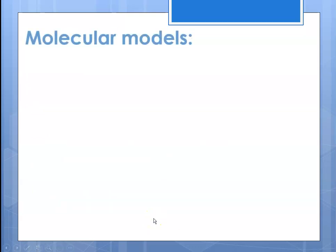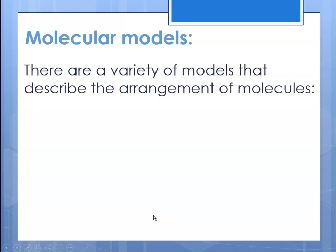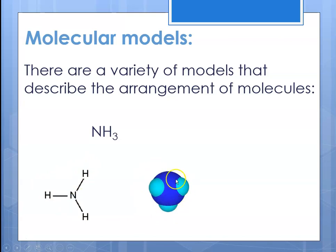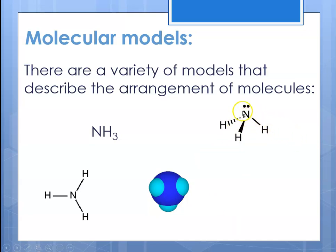Another thing we can use to show what's going on with a molecule are models. There are a variety of different types of models that show the arrangement of molecules. You can write a molecular formula like NH3, or show it in two dimensions as a nitrogen attached to three hydrogens, or use a space-filling model showing what the electron cloud would look like. You can also use a three-dimensional model — dashed lines mean the hydrogen is behind the plane of the paper, a filled wedge means it's coming out toward you, and a straight line means it's in the same plane.